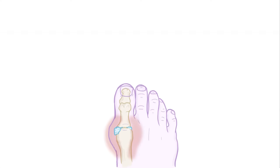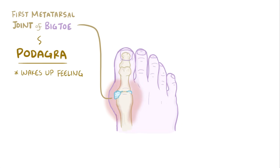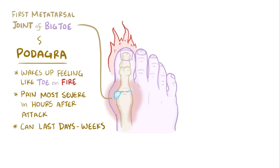Gout most often affects the first metatarsal joint of the foot, or the base of the big toe, and when it does, this condition is called podagra. Classically, in podagra, a person will wake up from sleep feeling like their big toe is on fire — even the weight of the sheets can be painful. The pain is most severe in the hours immediately following the attack and then generally lessens with time, but discomfort and swelling can last for days or even weeks.